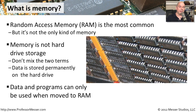Memory is so important in our computers because the only time you can perform a calculation on anything is if you get it into the memory of your computer. It's very common to pull files off of our hard drive, and the only time we can execute them or perform any calculations is when we have them in active memory. We might modify a graphics file or work on a spreadsheet, then save that back to the hard drive. But the only time we can run a program is when we have that information in memory.